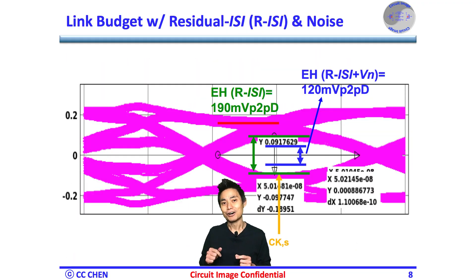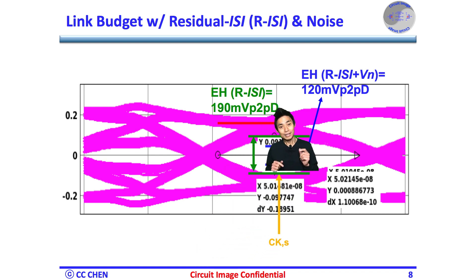In this case study of the link budget with residual ISI and noise, the initial eye height of the residual ISI is roughly 190 mV peak-to-peak differential as shown before. If the RMS value of the noise is 5 mV at the sampler input, then the peak-to-peak noise amplitude would be 70 mV for bit error rate equals 1e-12.